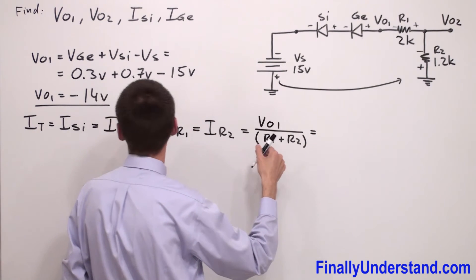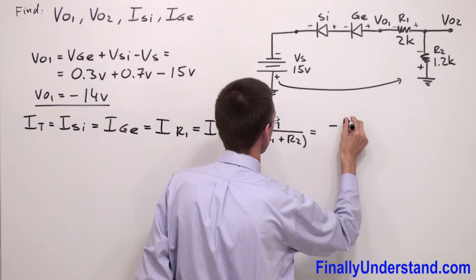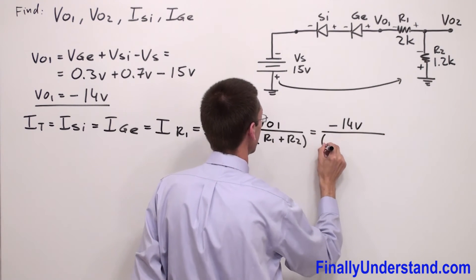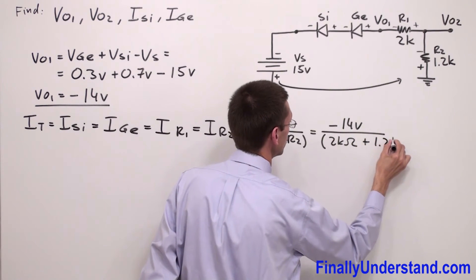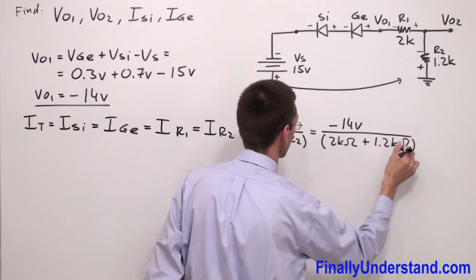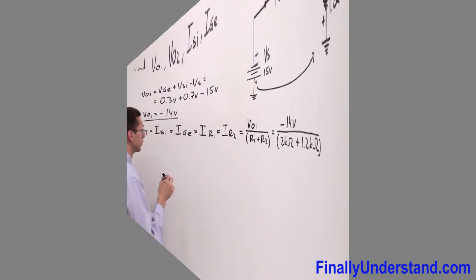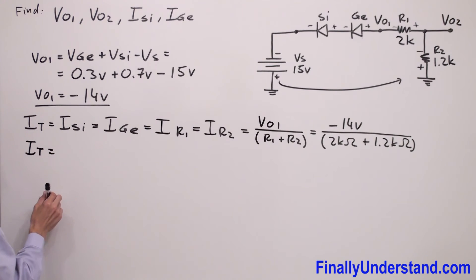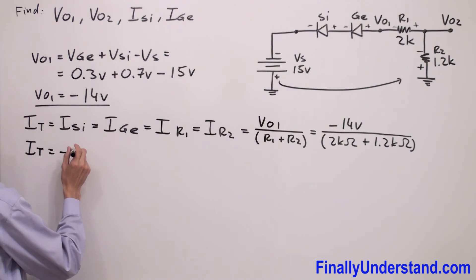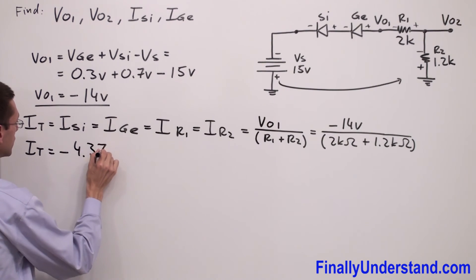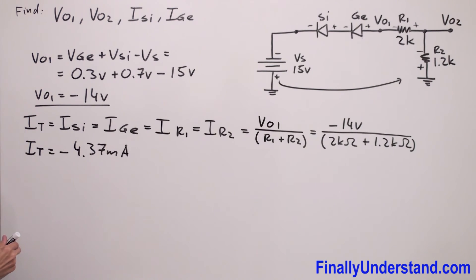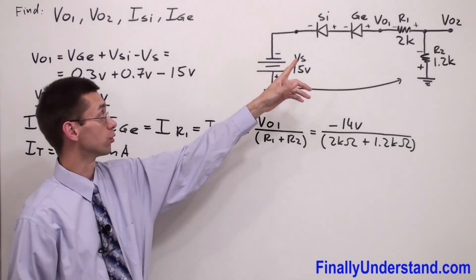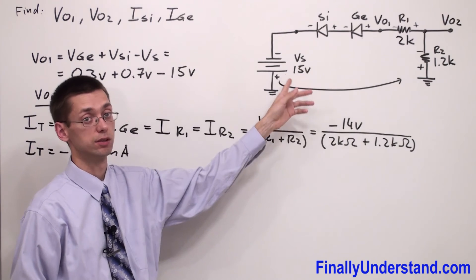So we can write that I_total is equal to Vout1 over the sum of the two resistors: R1 plus R2. This is equal to negative 14 volts over 2 kilohms plus 1.2 kilohms — this is Ohm's law. So I_total is equal to negative 4.37 milliamps. I_total represents the current through each diode and each resistor because this is a series circuit.